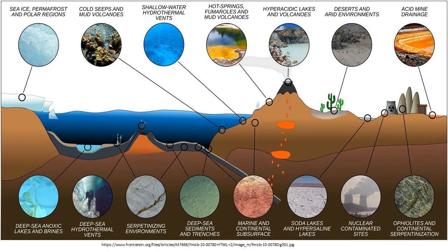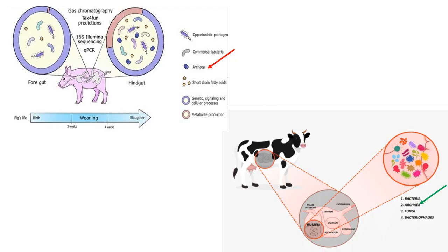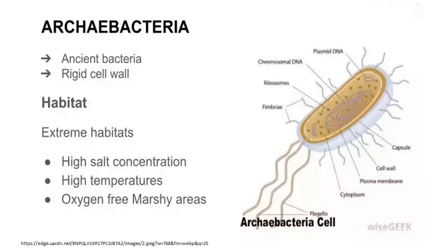Archaeobacteria have been discovered in cold environments as well. They appear to constitute up to 34% of the prokaryotic biomass in coastal arctic surface waters. A few are also symbionts in animal digestive systems.